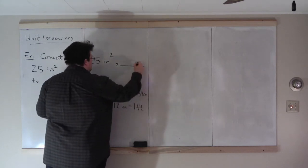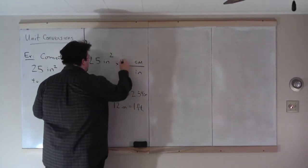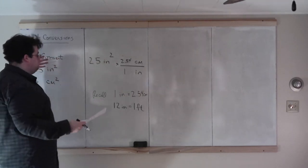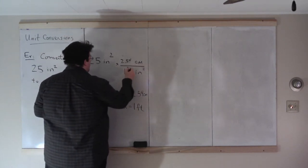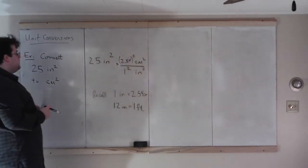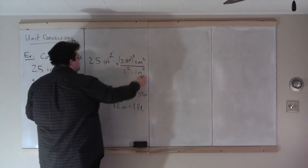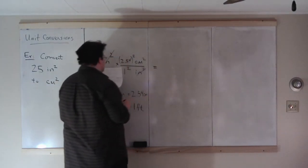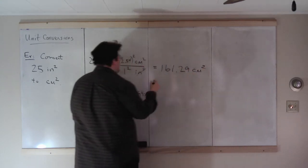So if we get rid of inches — divide by inches, multiply by centimeters — that may look like all we need. But notice we have inches times inches; we have inches squared. So to eliminate inches squared, we're going to need to square our conversion factor. We need to square the bottom and the top. With those squares, inches squared cancels and we're left with centimeters squared. So: 25 times 2.54 times 2.54 equals approximately 161.29 centimeters squared.